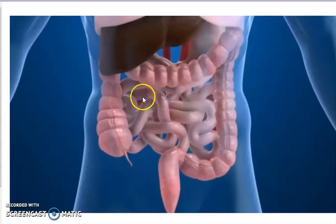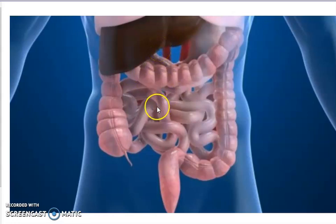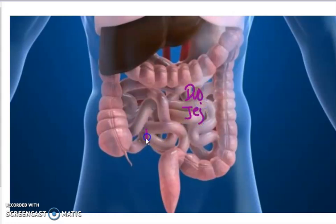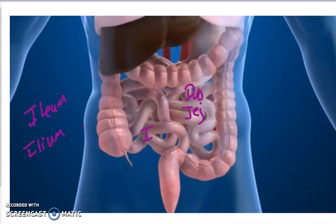Let's review. The first part is the small intestine. Coming out of your stomach is your duodenum, then the jejunum, then the ileum. Remember, this is ileum with an E, because ileum with an I is the bones of your hips.